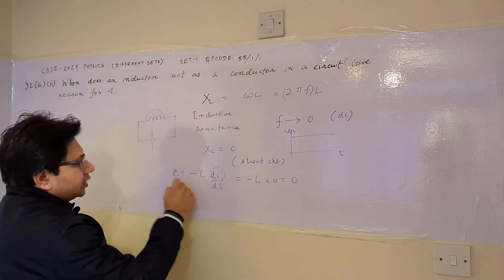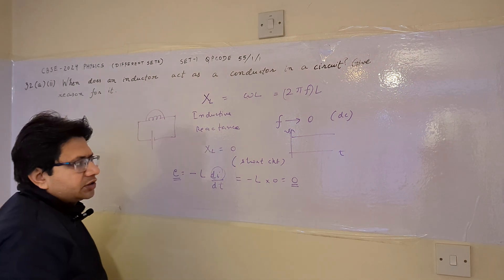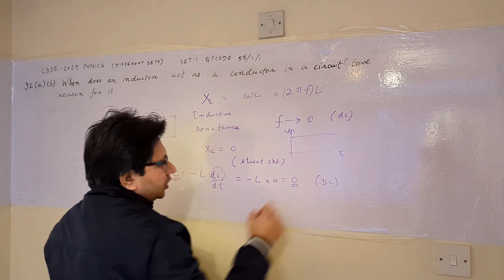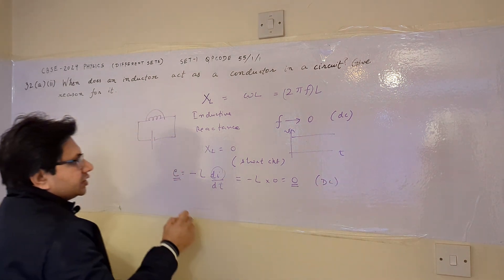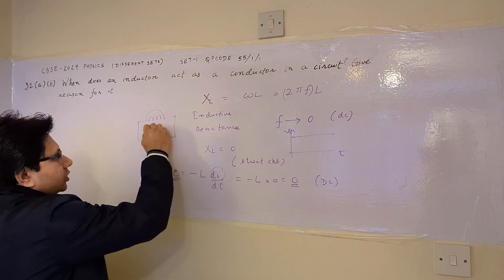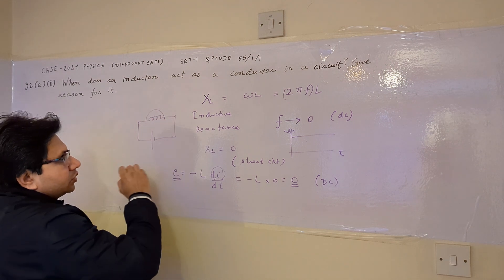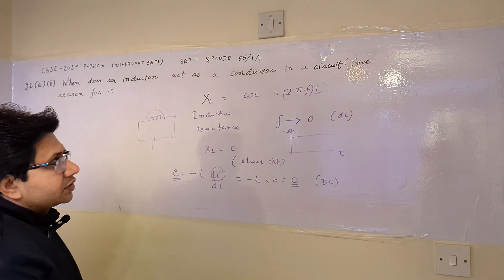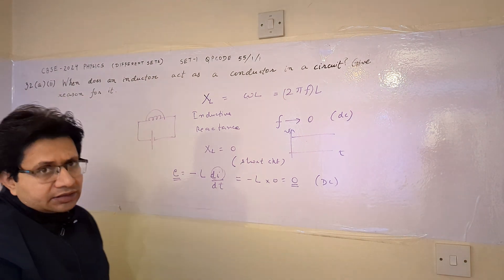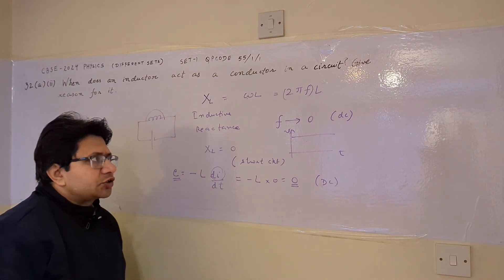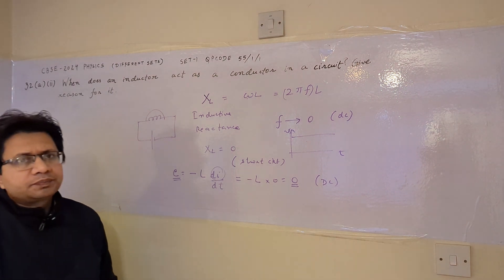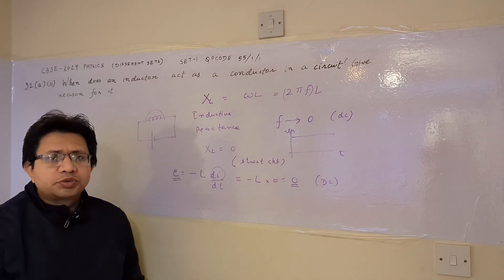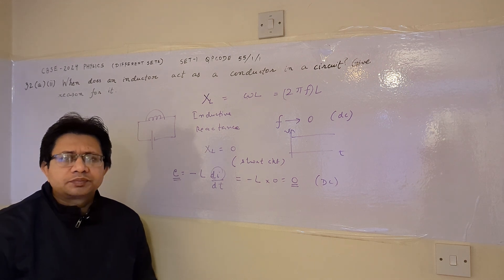So we can say that the voltage across the inductor is 0 when we apply the DC signal. In other words, it behaves as a conductor. This is the second explanation of this question. Hope you understand the solution. Thank you.